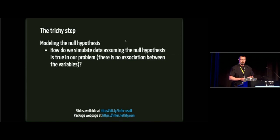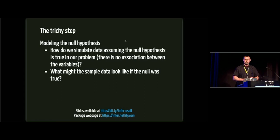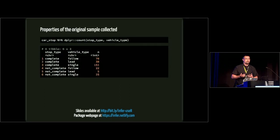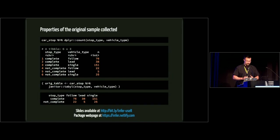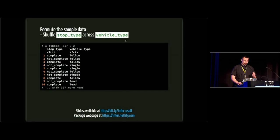The tricky step, like I said, is modeling the null hypothesis. How do we simulate data assuming that null hypothesis is true? We want to build some sort of null distribution with the null hypothesis being that there is no association between the two variables. The important question here to think about is: what might the sample data look like if the null hypothesis is true? If there is no association between those two variables?